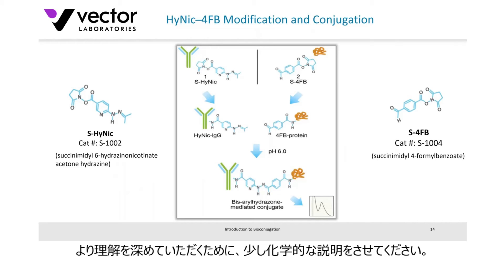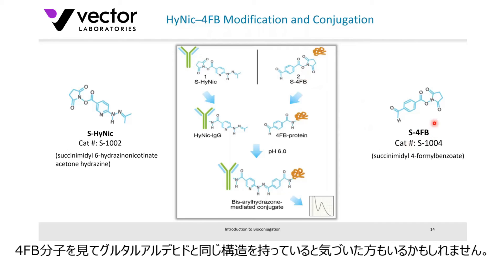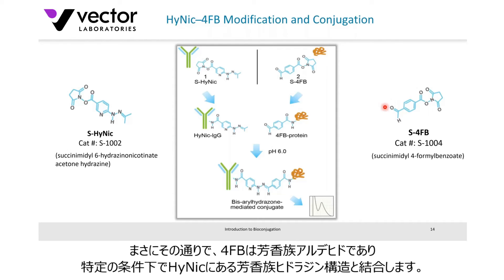Looking at the chemical structures: the HyNic molecule has a reactive end group that binds to amine groups on the antibody. Similarly, 4FB binds to amine groups on the enzyme, the peroxidase. Some of you might recognize that 4FB is an aromatic aldehyde — similar to what we saw with glutaraldehyde — and it links to an aromatic hydrazine on HyNic. Under the appropriate conditions, once each is bound to its given target, they yield this particular bioconjugate.